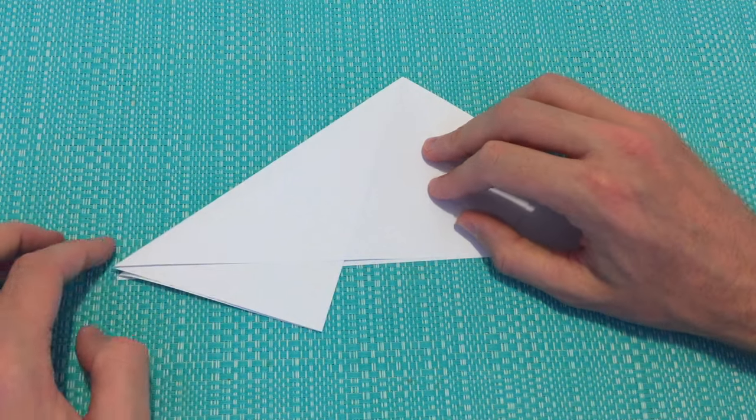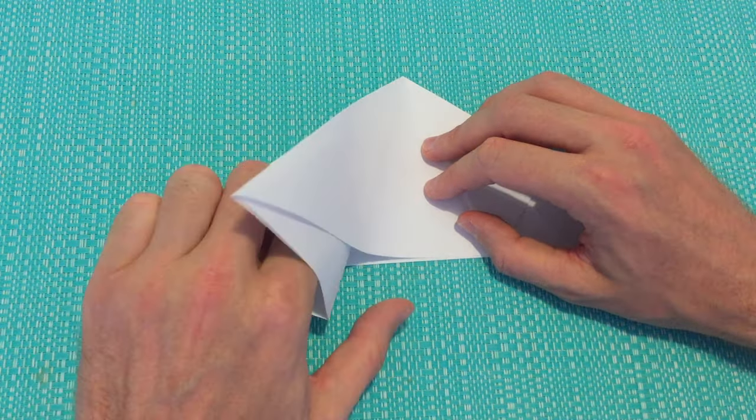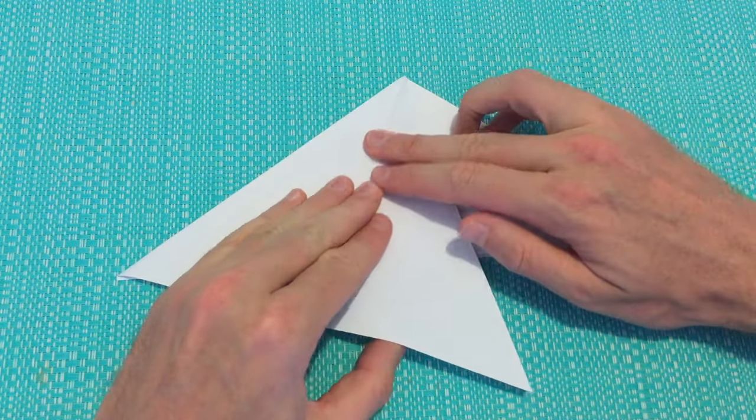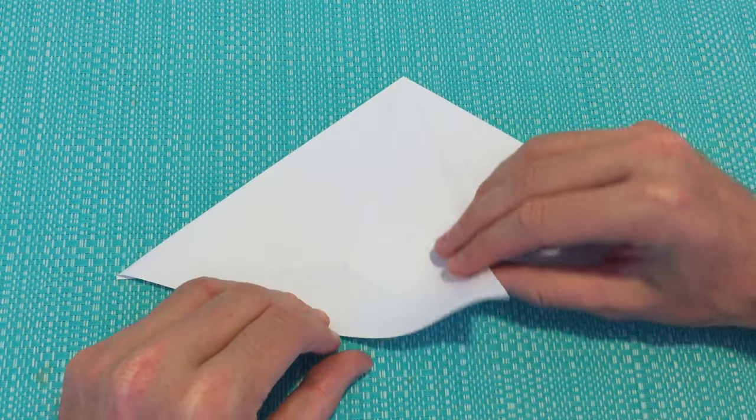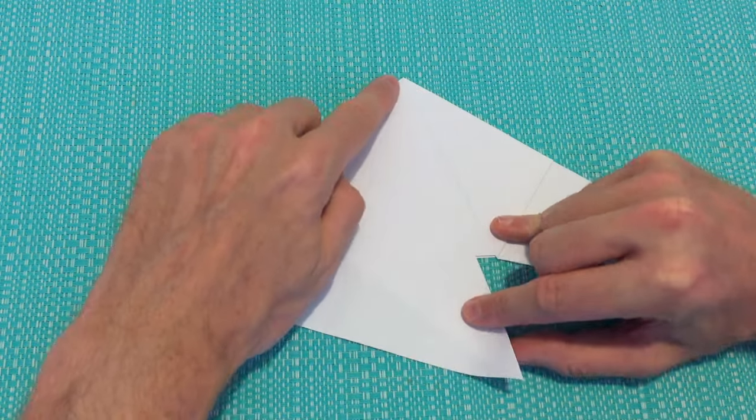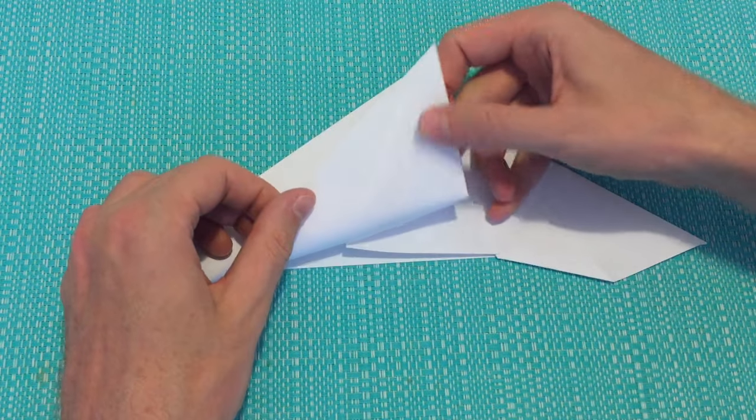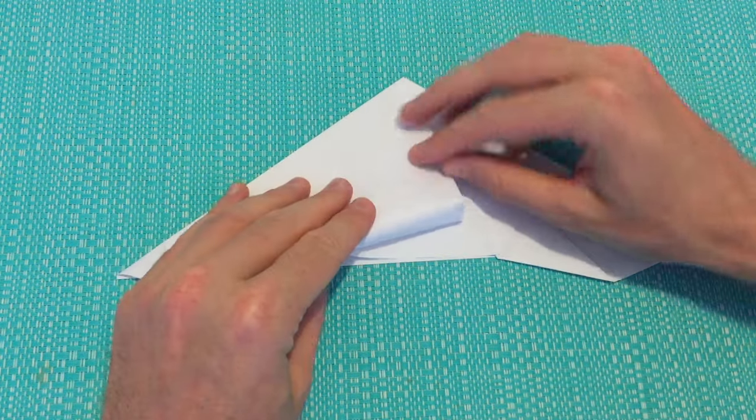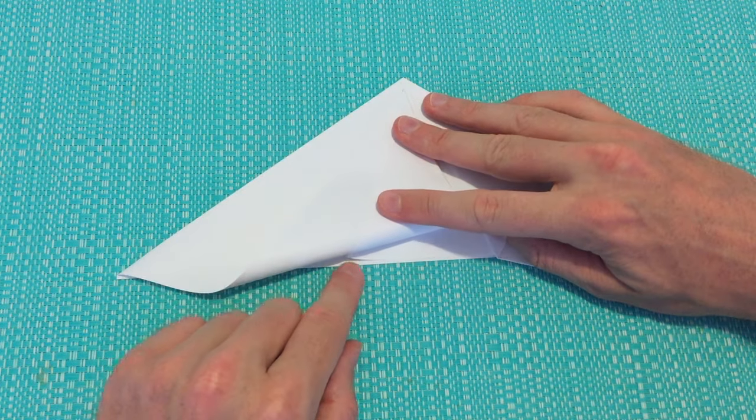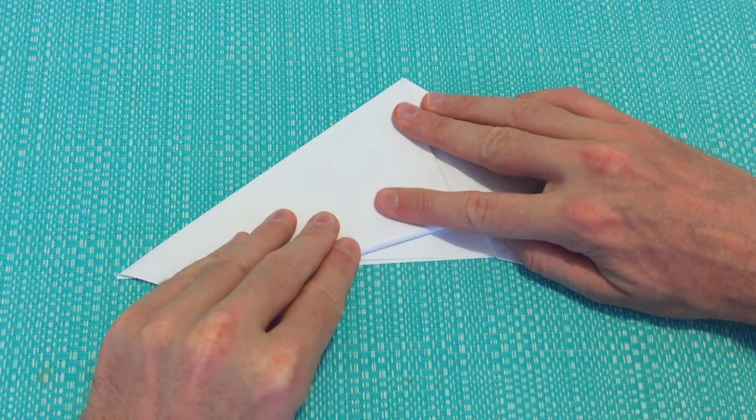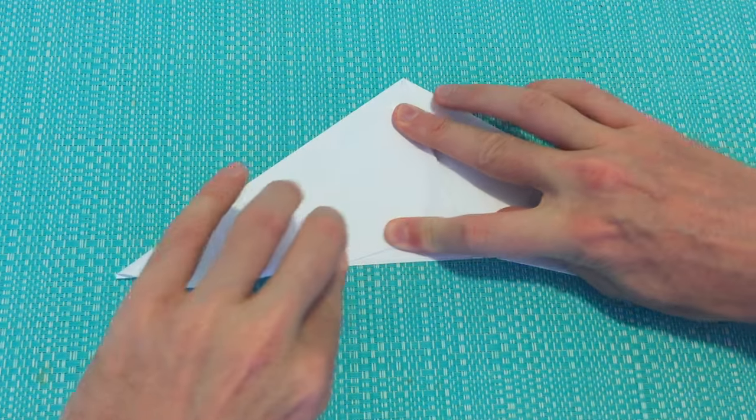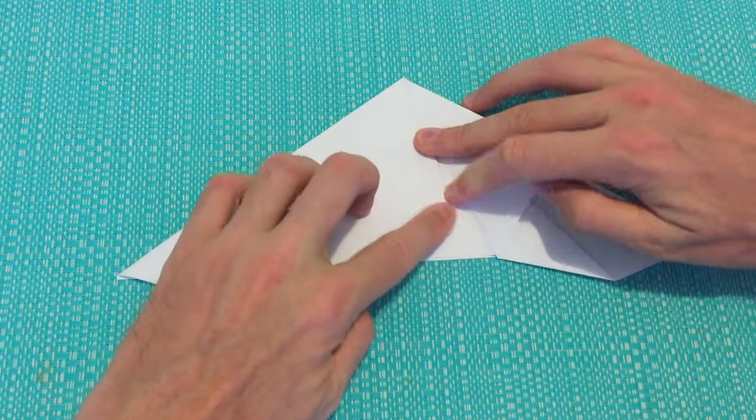We're then going to do the same on the left. So we're getting the top flap, opening it completely, pressing down that center crease, bringing this bottom point up towards the nose. Once again, if it does catch down the bottom, no need to force it. Take it as far as it will go and then create the crease.